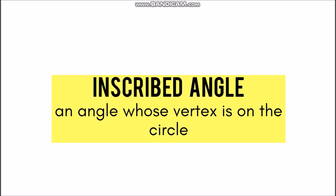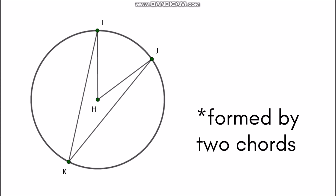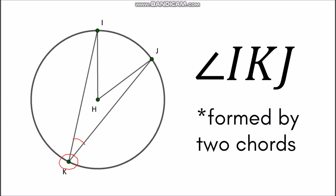We also have inscribed angle. It is an angle whose vertex is on the circle itself. In finding an inscribed angle, take note that it is formed by two chords. In this example, the two chords are segment IK and segment JK. They intersect with a common endpoint at point K, which serves as the vertex of the given angle. Since they meet at point K, which is on the circle itself, therefore angle IKJ is considered an inscribed angle.